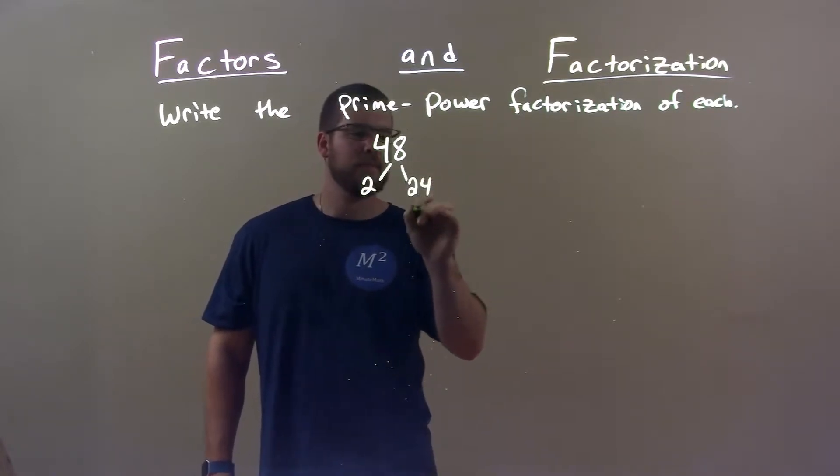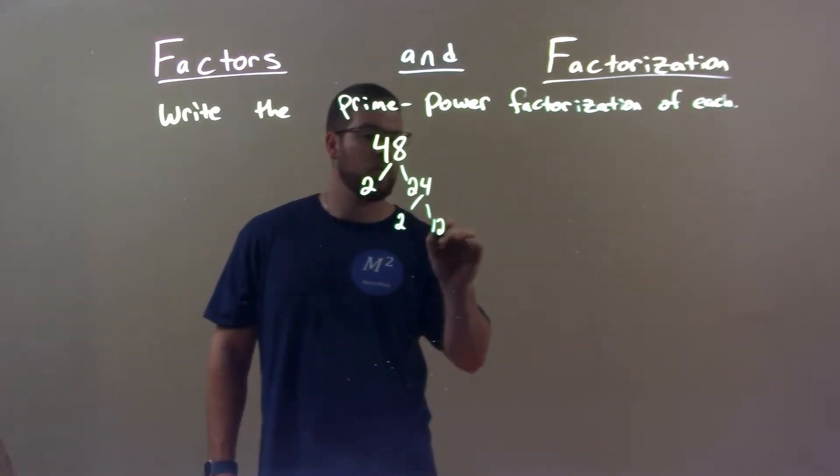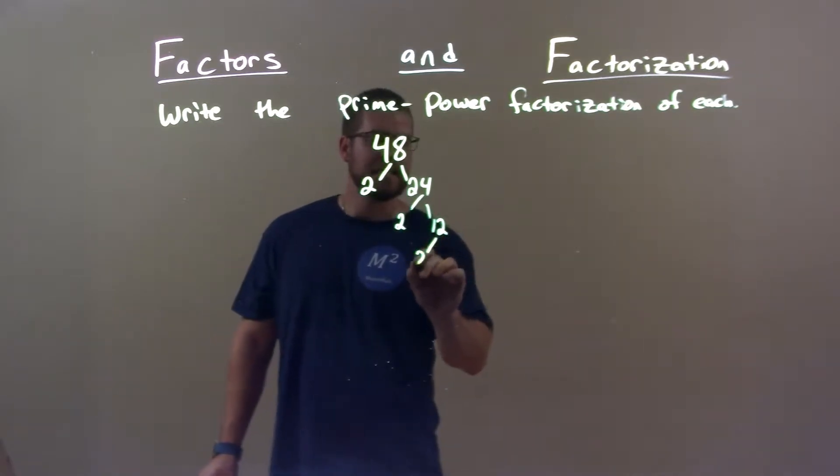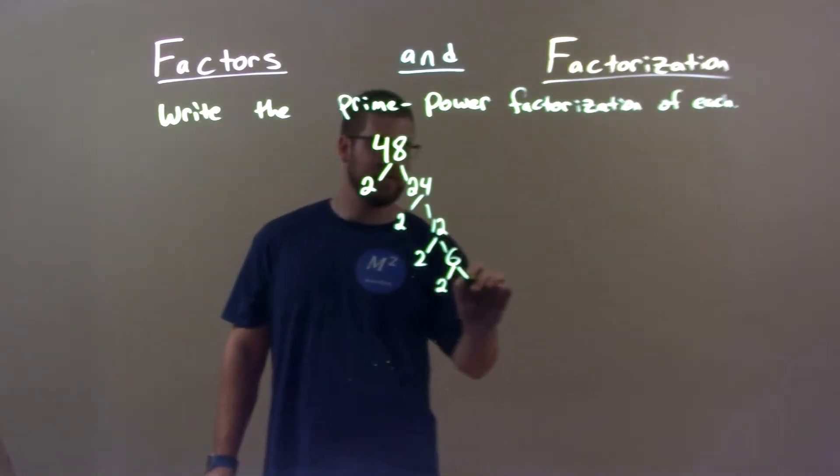2 times 24. 24 is 2 times 12. And 12 is 2 times 6, and 6 can still be broken down to be 2 times 3.